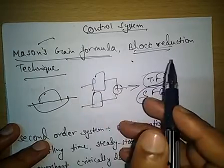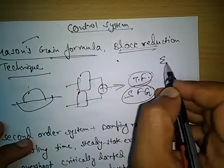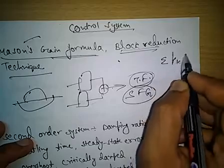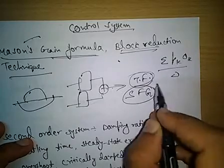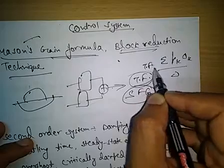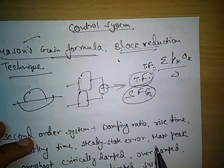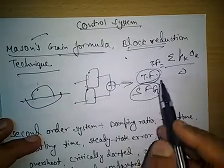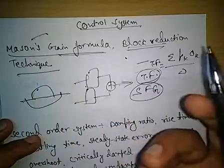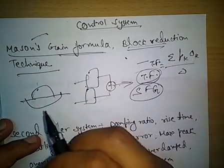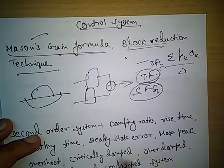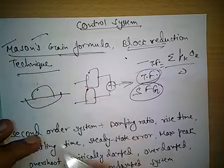Finally, we apply Mason's Gain Formula to find out the overall transfer function. The famous formula is: summation of Pk·Δk divided by Δ. Using this formula we can find out the transfer function. Various questions from this topic have been asked in previous GATE exams, so it is very important for the upcoming exam as well.